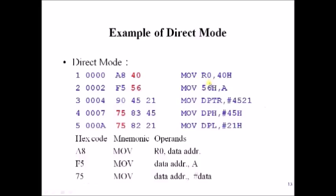For example, MOV R0, 48 — the assembler treats 40 as an address, so whatever value is present at address 40 is copied into R0. MOV 56, A copies the contents of the accumulator into memory location 56. MOV DPTR, #4521 — with the pound symbol, 4521 is treated as a data value and copied directly into DPTR. Without a pound sign, a value is treated as an address; with a pound sign, it is treated as a data value.